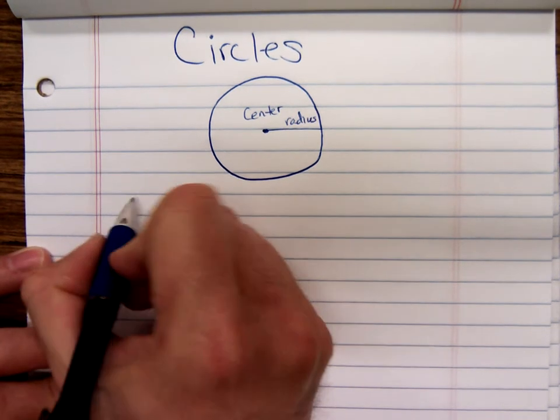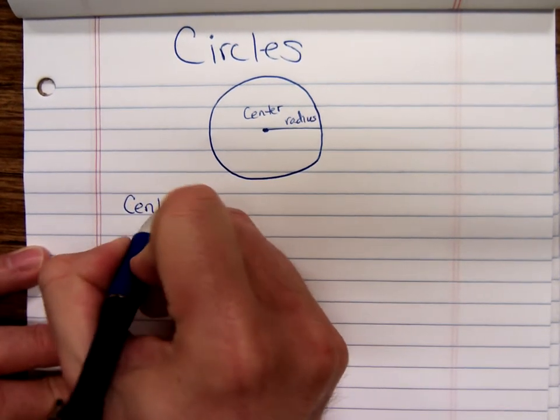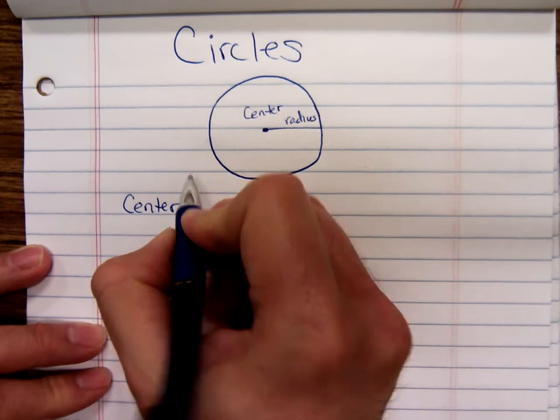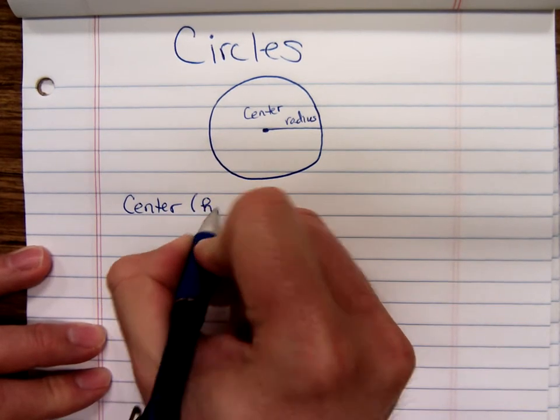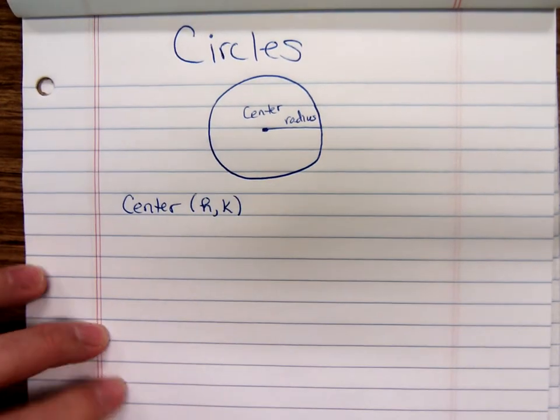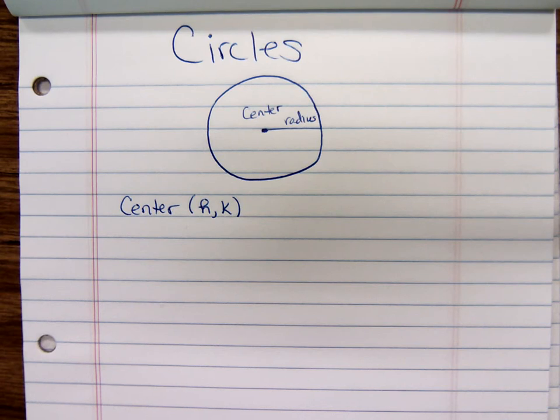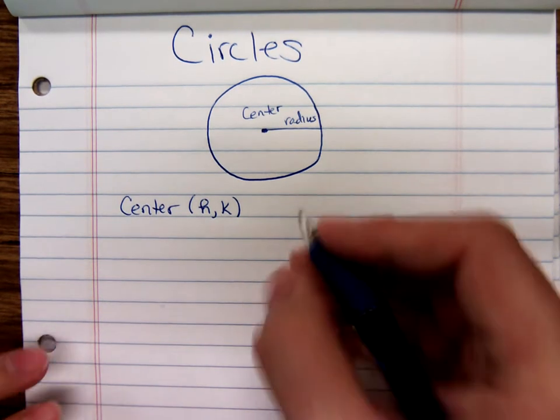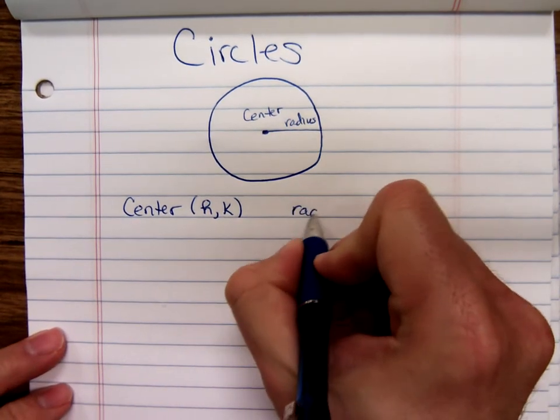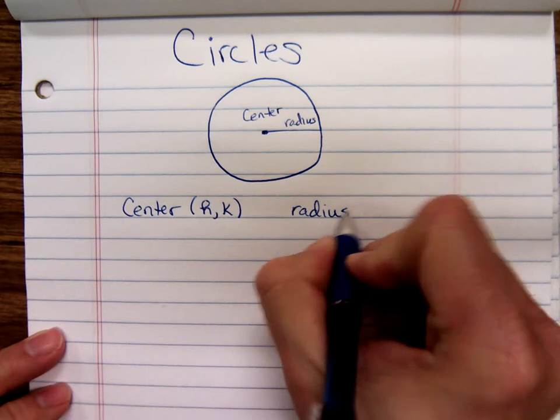We're going to denote the center of the circle. Notice that's a point, that's an ordered pair. We're going to call it h, k. The x coordinate of the center is h, the y coordinate of the center is k. And we're going to use the letter r to denote the radius.